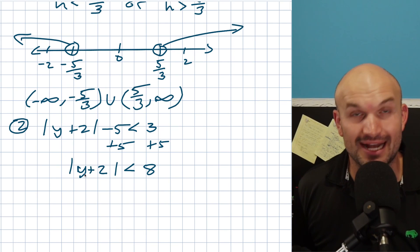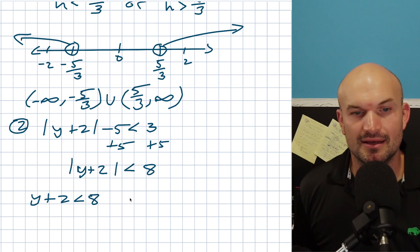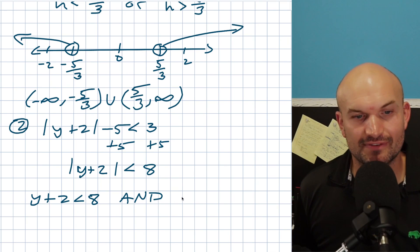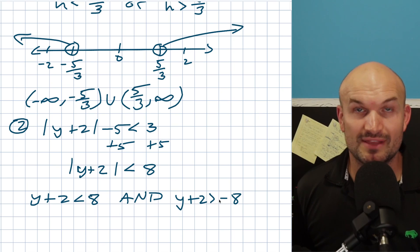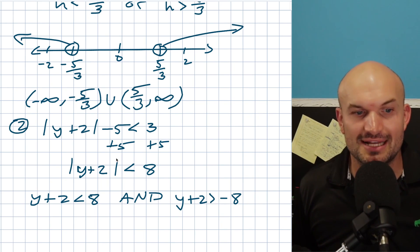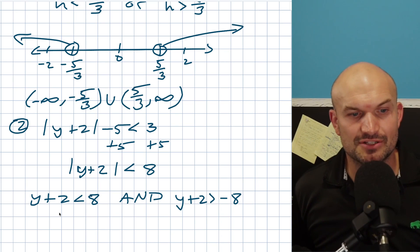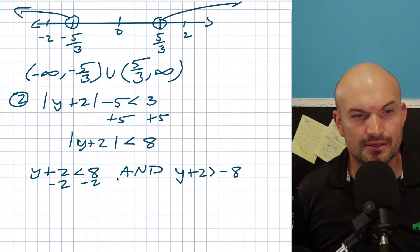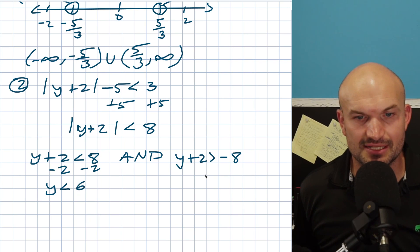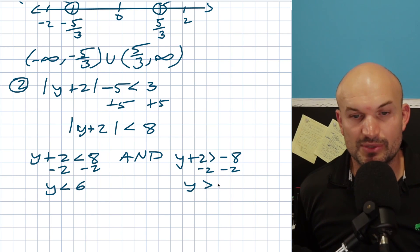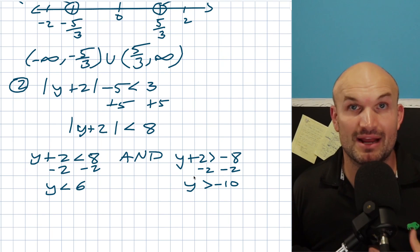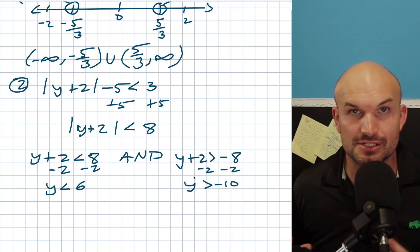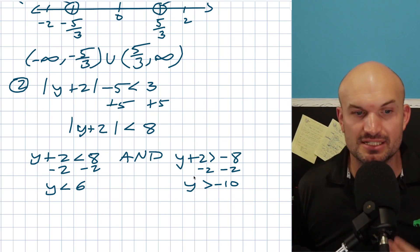To get rid of the absolute value, I create my two cases. The positive case: Y plus two is less than or equal to eight. The negative case: Y plus two — flip the sign — is greater than or equal to negative eight. Make sure you change that sign when you negate. Using inverse operations: Y is going to be less than positive six, and Y is going to be greater than negative 10. When dealing with AND, we're looking for the intersection — both cases have to be true.